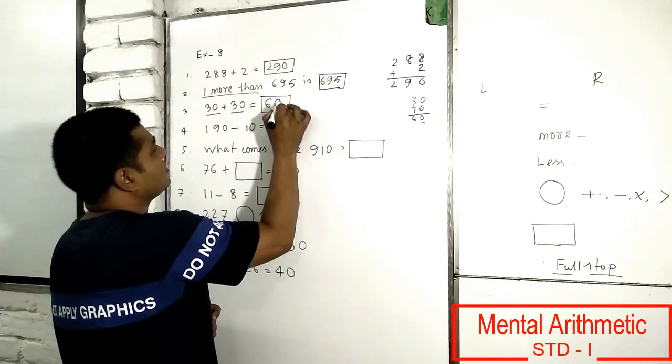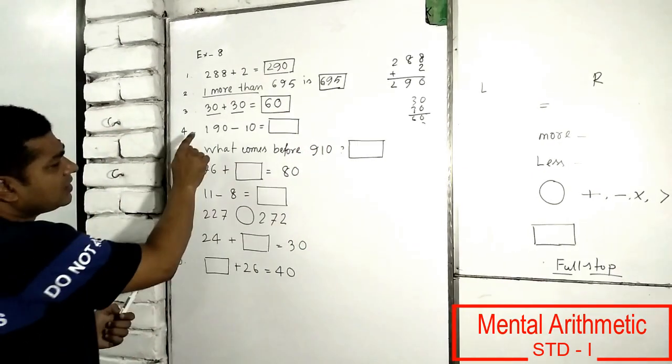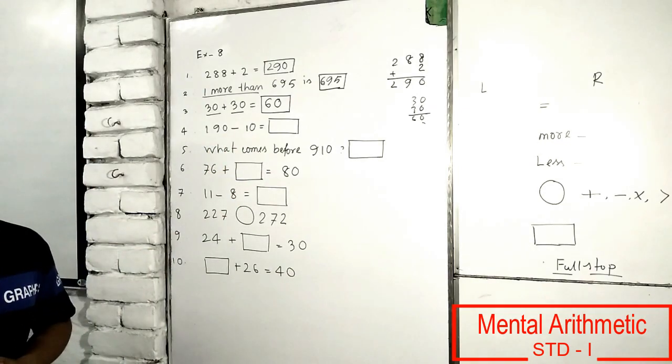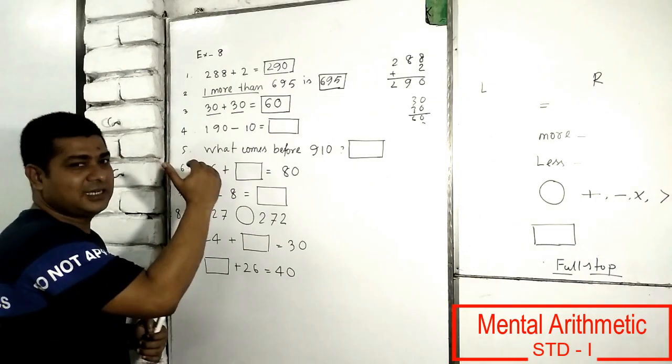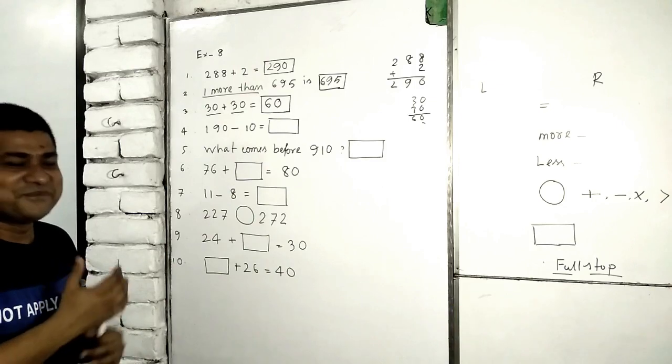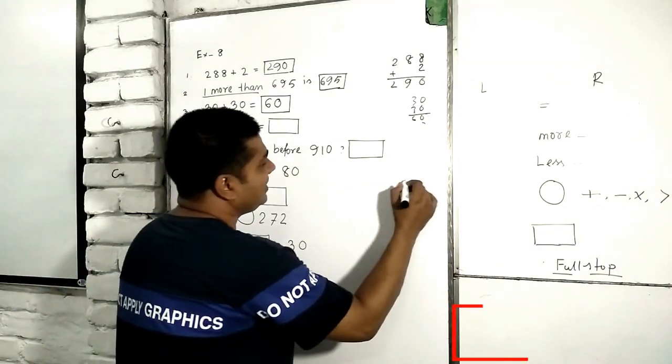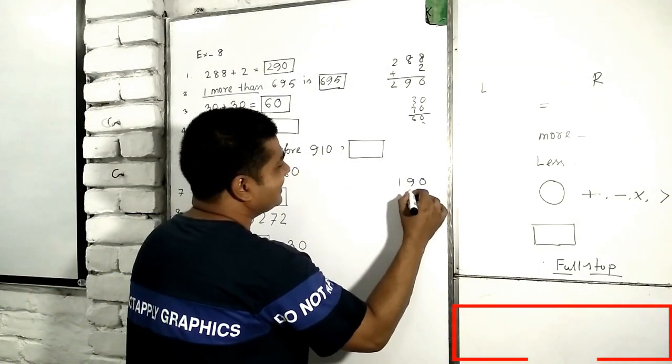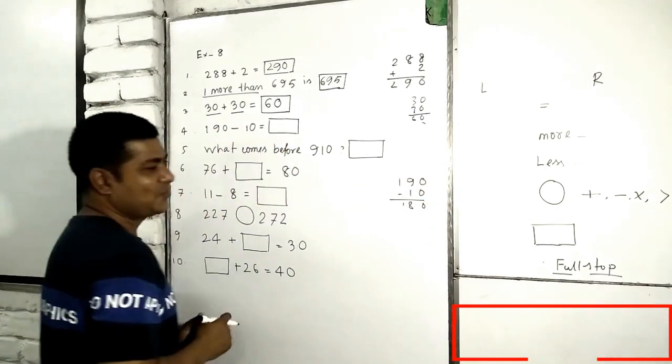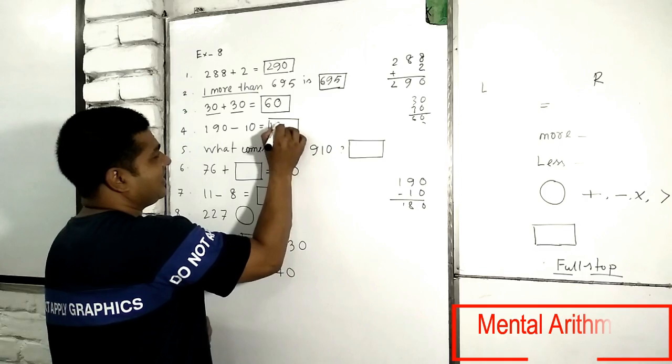But from 190 you have to subtract 10. It is horizontally. It looks very hard or very critical. Then you will write it vertically. 190 minus 10. So we will get 180.